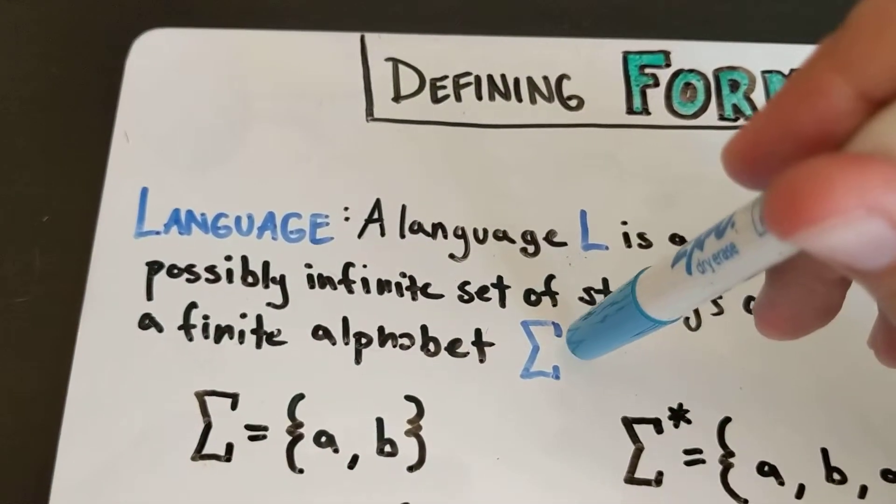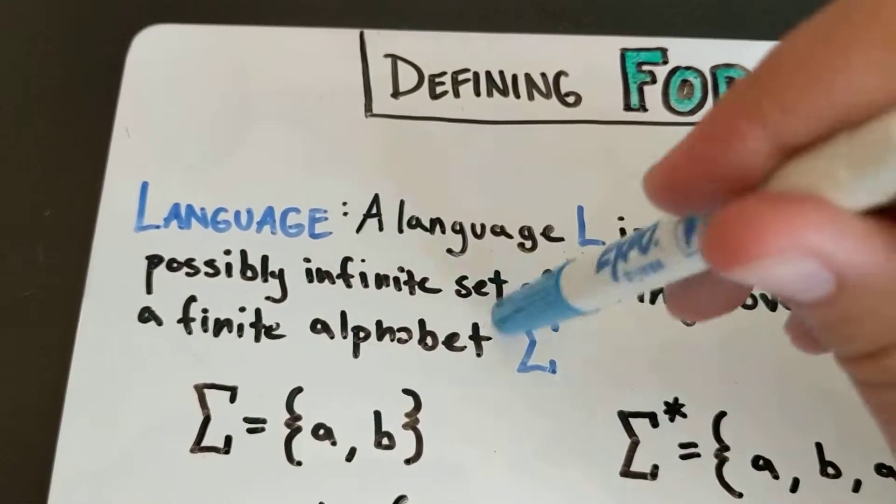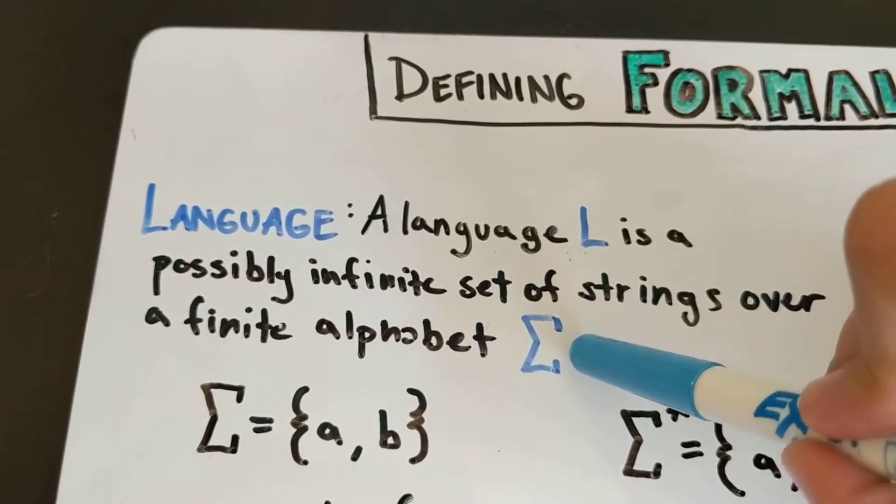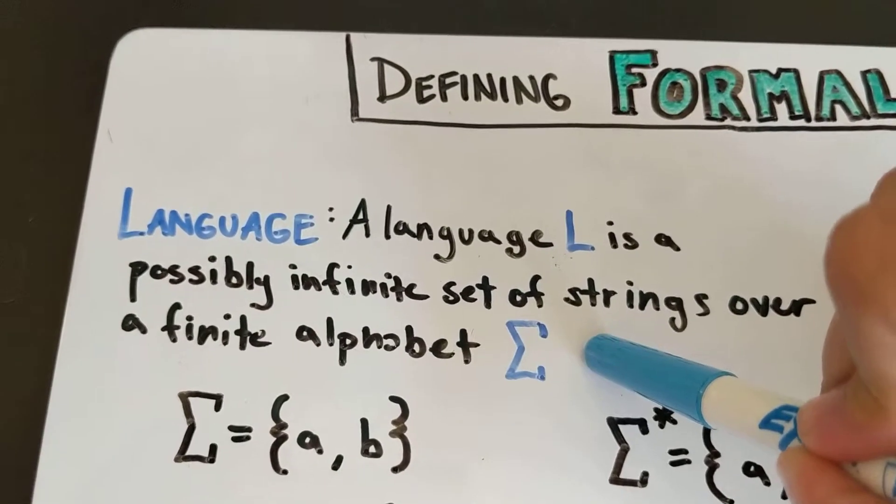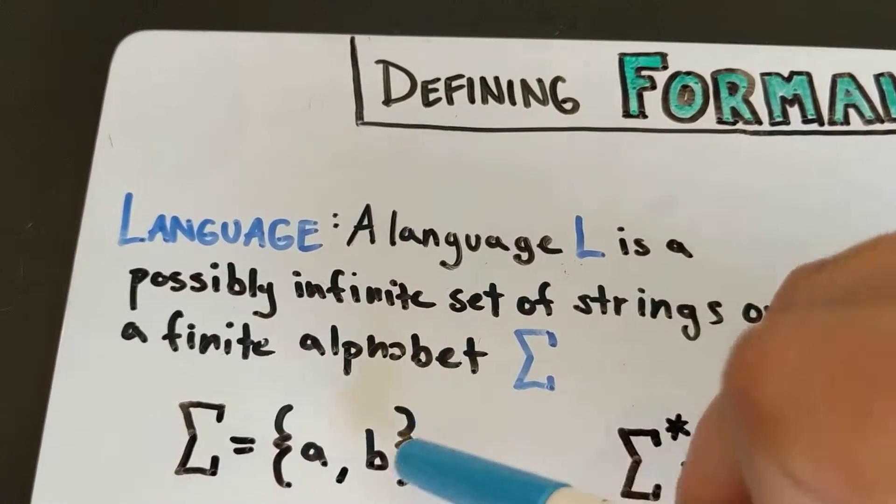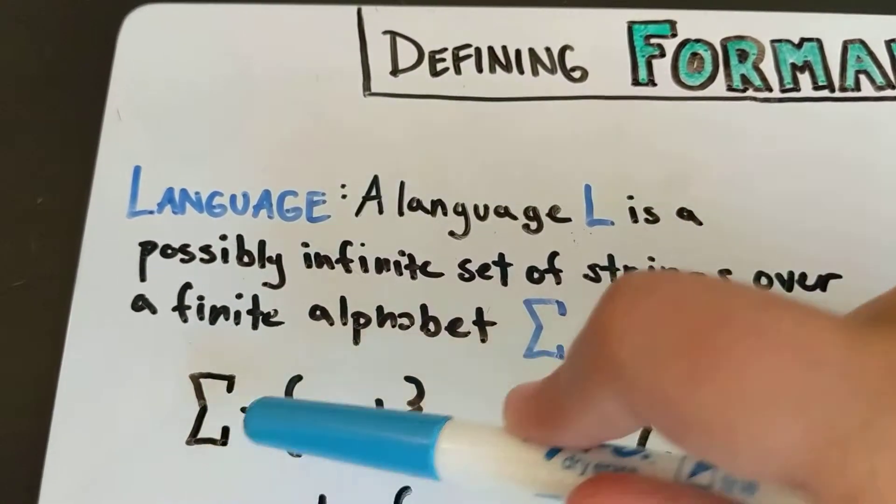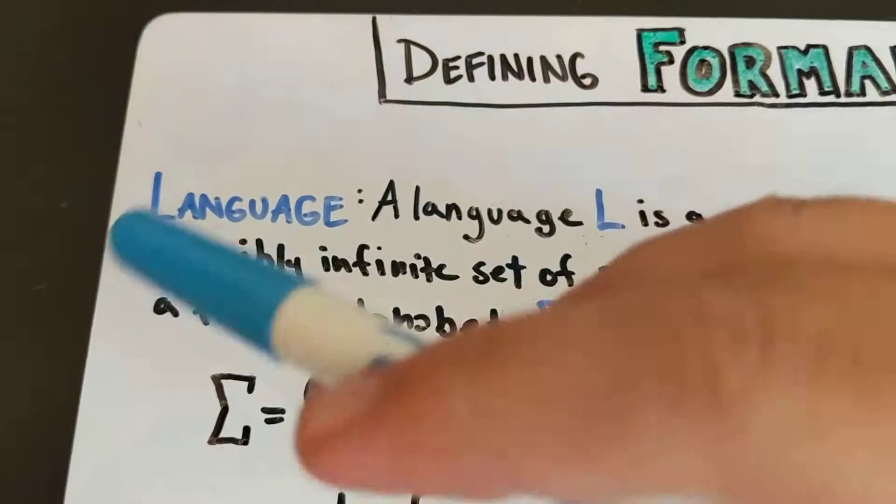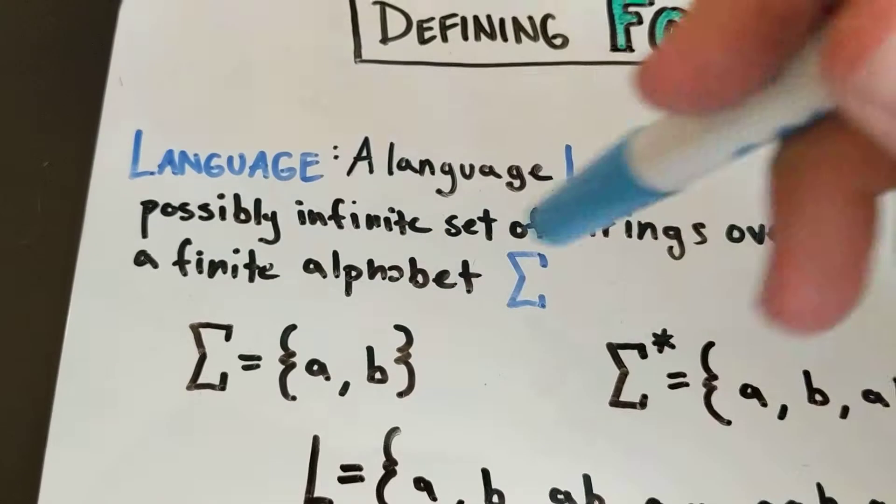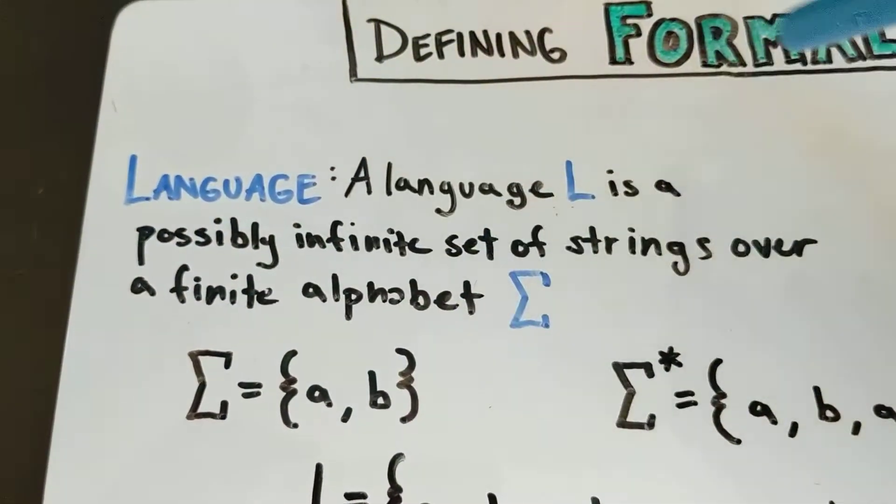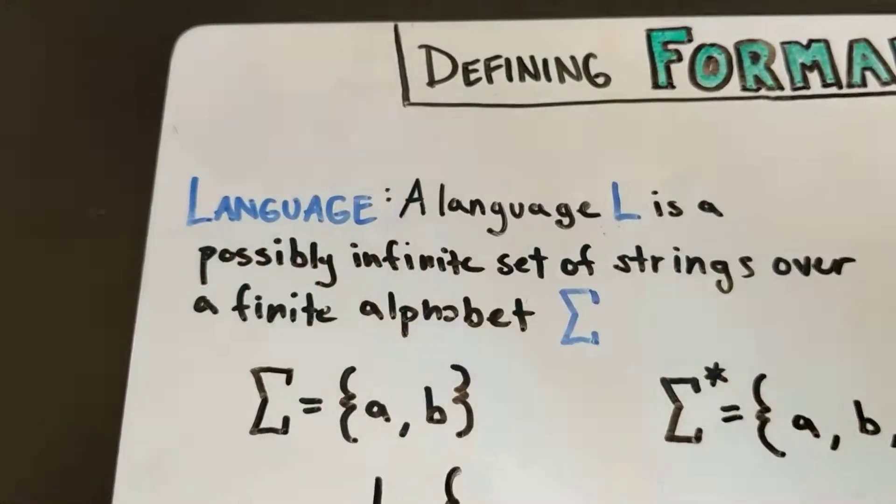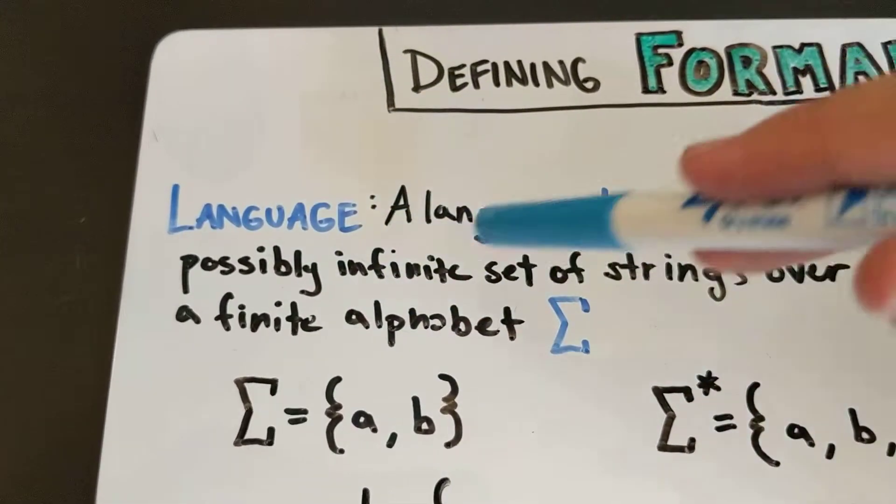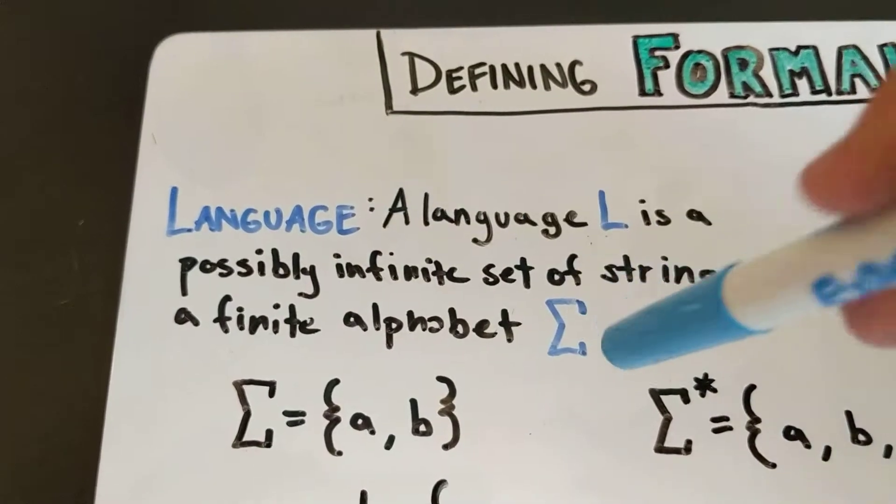A language L is a possibly infinite set of strings over a finite alphabet. So this alphabet uses this symbol Σ and is just a set of symbols of some sort. So this is your alphabet. You have a language that has the symbol A and the symbol B.